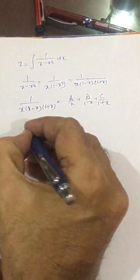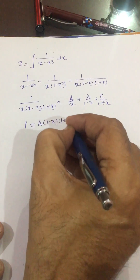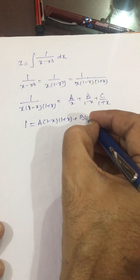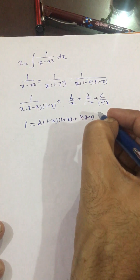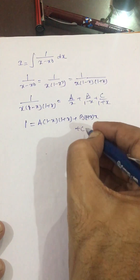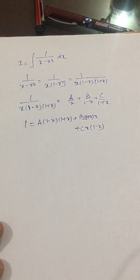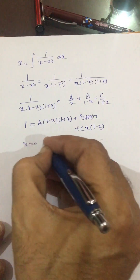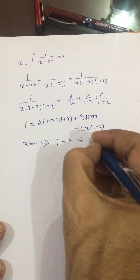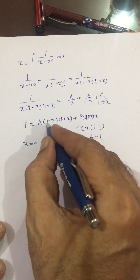Multiplying through, we get: 1 equals A(1 minus x)(1 plus x) plus B·x·(1 plus x) plus C·x·(1 minus x). Putting x equal to 0, we get 1 equals A, since the B and C terms become 0. So A equals 1.